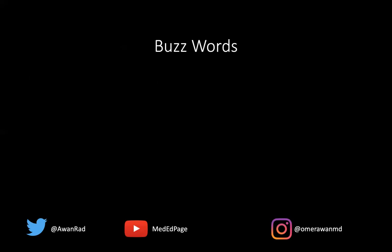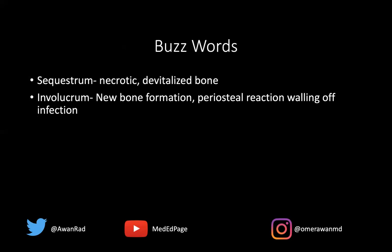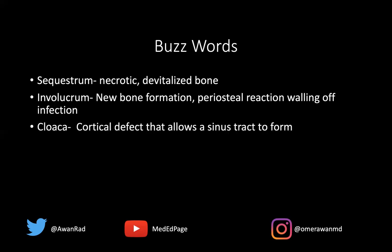There are important buzzwords everyone should know when describing chronic osteomyelitis. A sequestrum is an area of sclerosis or necrotic devitalized bone. An involucrum is the periosteal reaction — the new bone formation that walls off the infection, that periostitis or new bone formation that shells off the infection. A cloaca is the cortical defect that allows a sinus tract to form, allowing pus or infected material to come out of the marrow, go into the soft tissues, to the skin surface, forming that sinus tract.